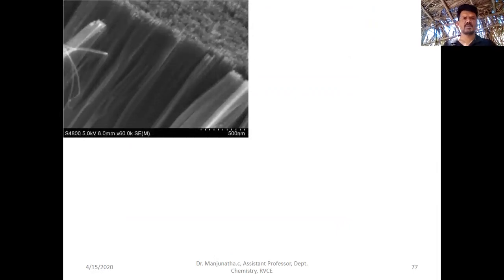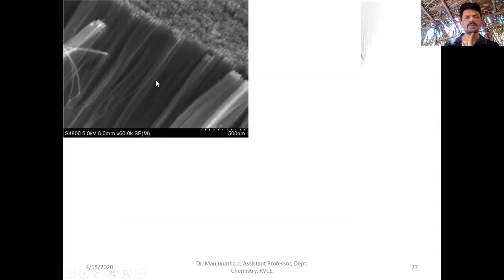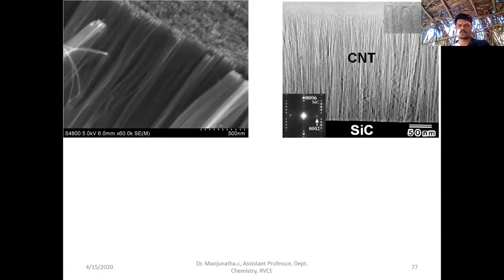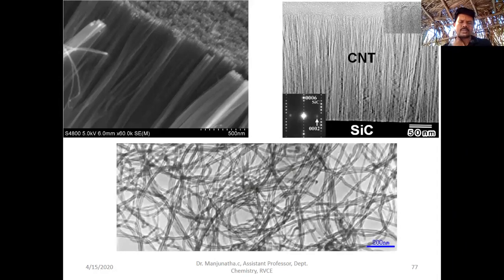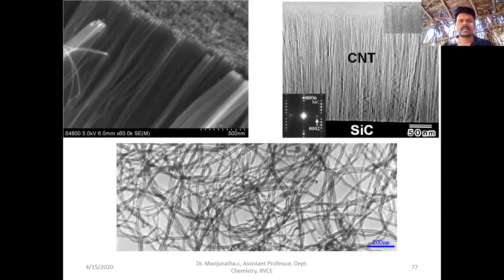These are some scanning electron microscope images of carbon nanotubes grown on some substrate. The scale is around 500 nanometers. You can see how beautifully they have grown vertically on the substrate. This is another electron microscope image showing carbon nanotubes grown on silicon carbide substrate. For the growth, you need to have a substrate. This is an entangled or coiled shape of CNTs which are grown without substrate. The first two are with substrate. These are the real images of the carbon nanotubes.